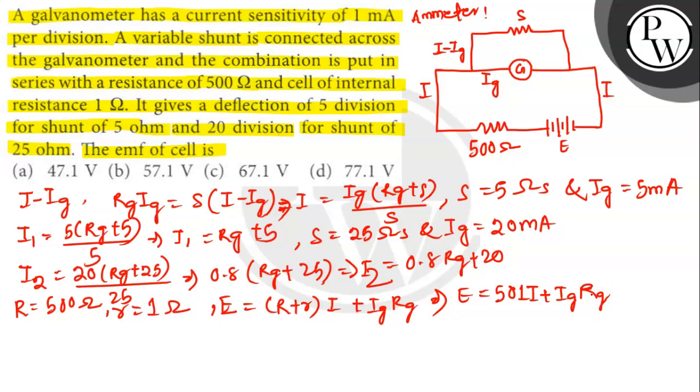Now substituting I1 in the EMF equation we get that E equals 501 into RG plus 5 plus 5 RG. So value of E equals 2505 plus 506 RG.